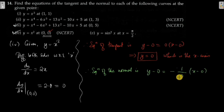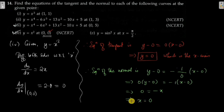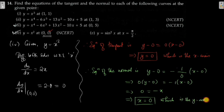For the normal, y − 0 = (−1/0)(x − 0). Since 1/0 is infinity, we do cross multiplication: 0 · (y − 0) = −1 · (x − 0), giving 0 = −x, so x = 0. This is the equation of the normal, which is the equation of the y-axis. You may pause the video and note down your solution. Thank you very much.